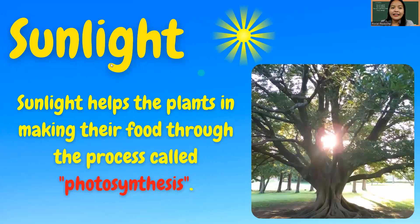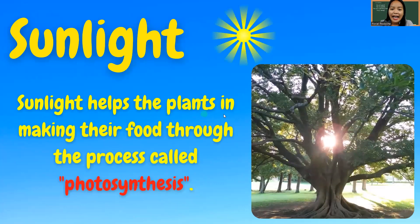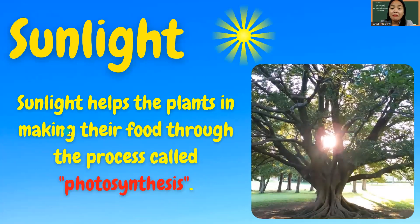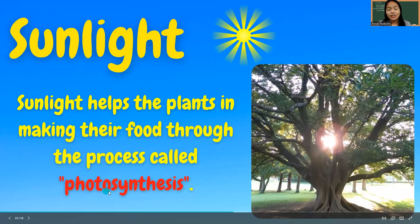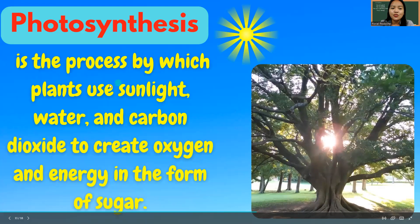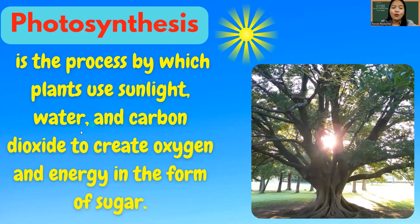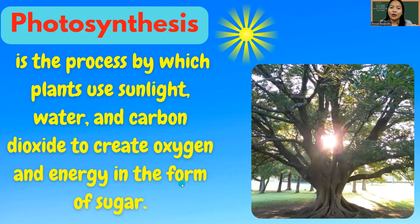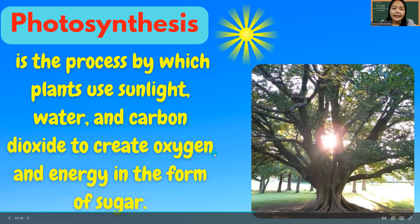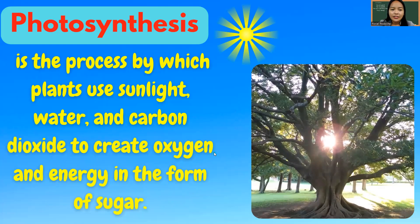The next need is sunlight. Sunlight helps plants make their food through the process called photosynthesis. Plants process their food through photosynthesis. Photosynthesis is the process by which plants use sunlight, water, and carbon dioxide to create oxygen and energy. So plants make their food using water, sunlight, and carbon dioxide through the process of photosynthesis.